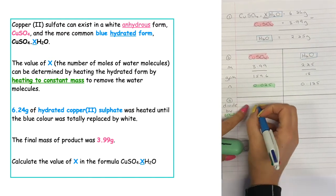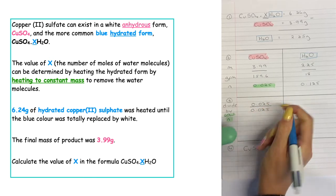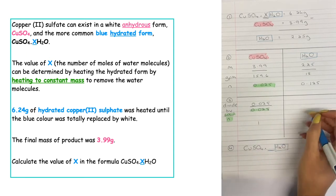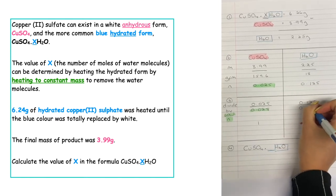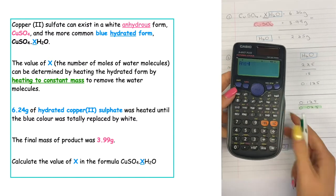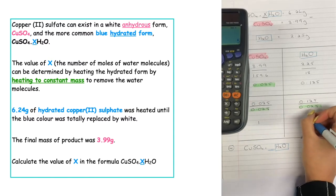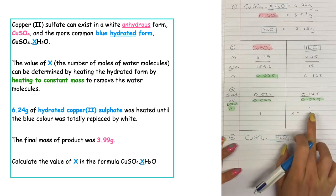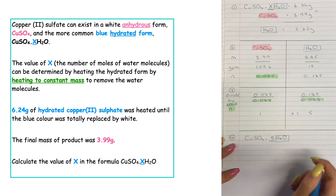We divide both values by the lowest number of moles. We've got 0.025 moles of copper sulphate divided by 0.025, which gives us 1. We've got 0.125 moles of water divided by 0.025, which gives us 5. So x is equal to 5. The final formula is copper sulphate with 5H2O.